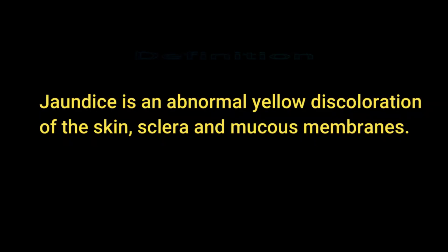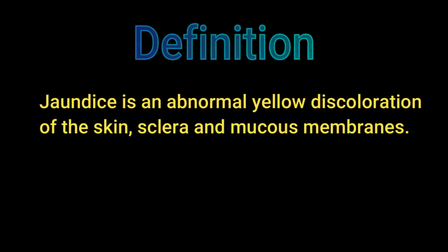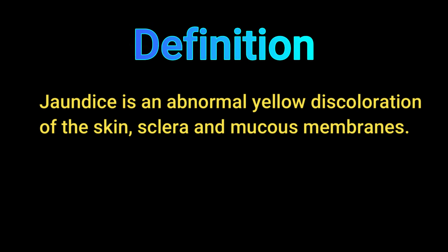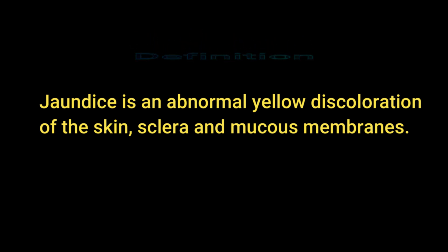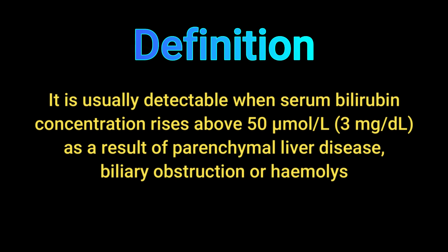Dear viewers, welcome to our channel. Today we are going to talk about the approach to jaundice. Jaundice is an abnormal yellow discoloration of the skin, sclera, and mucous membranes — as seen in the yellow coloration of the upper sclera of this patient.